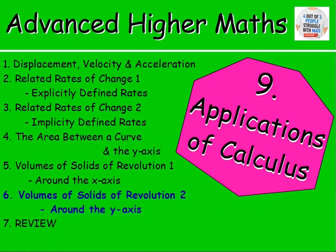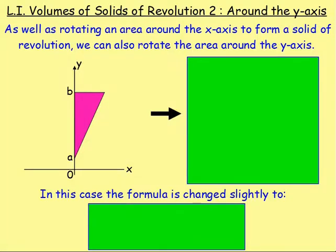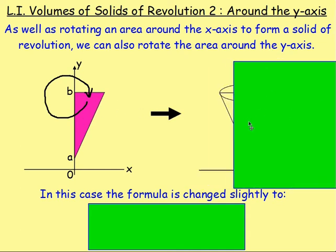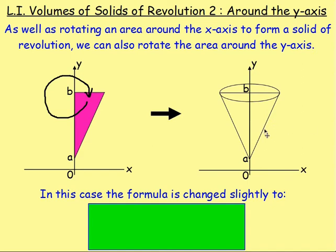Now in the last lesson we were taking our enclosed area between the curve and the x-axis and rotating it 360 degrees around the x-axis to get a solid shape. However, we can also rotate that area around the y-axis. If we rotate that right the way around we would end up with a solid shape, and if we rotate this area around it would look something like that. So you can see we end up with a cone if we're rotating that around.